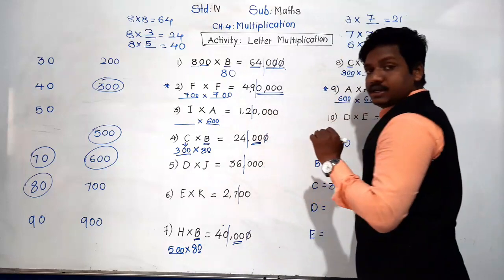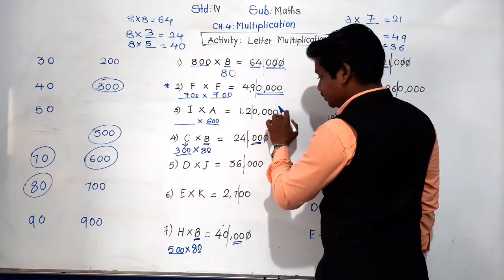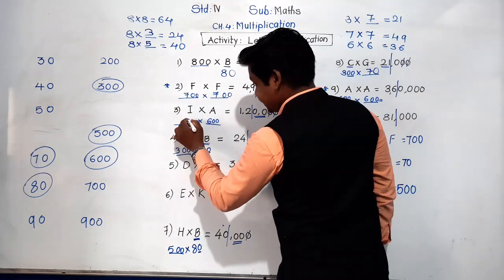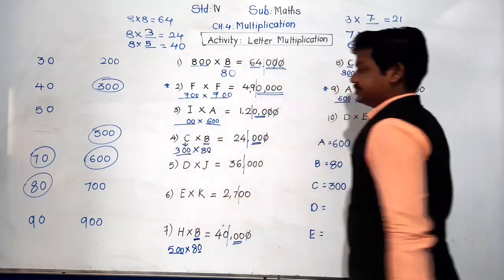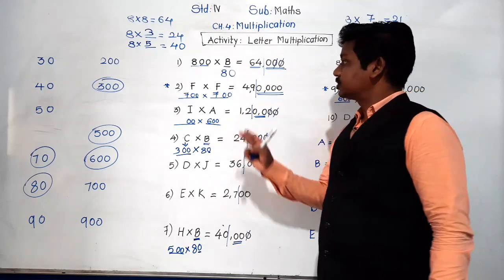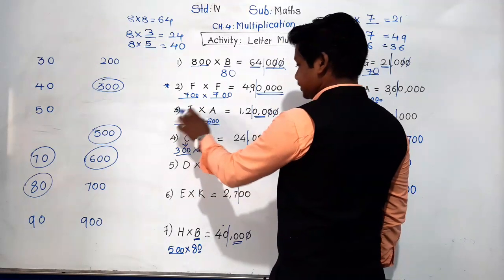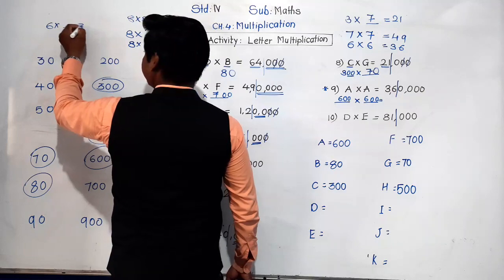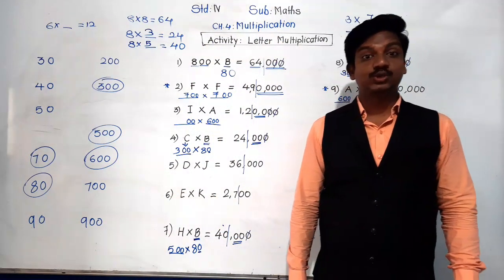Now using A = 600 in A × I = 1,20,000. A has two zeros. In the answer there are four zeros. The two zeros from A account for two; two more zeros remain — so I must have two zeros. From A, the digit is 6, so 6 × ? = 12. Six twos are twelve. So I represents 200.